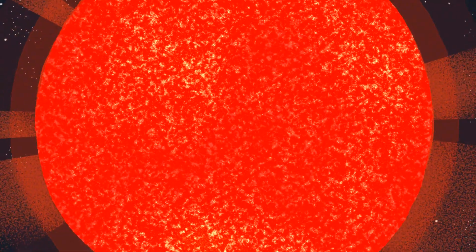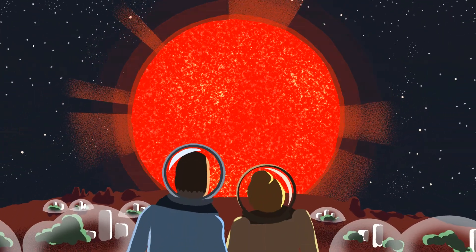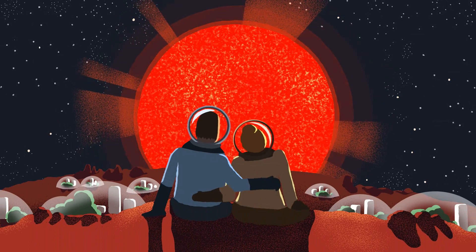After which the star we know and love will start to look very different. Hopefully by then we will have colonized another planet and future humans from Earth 2.0 can witness the next stage in the life cycle of our Sun.